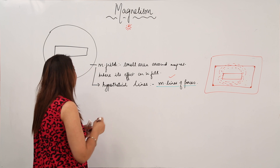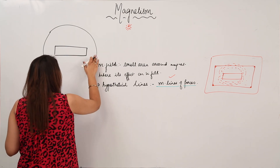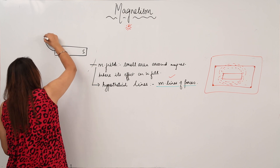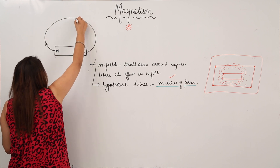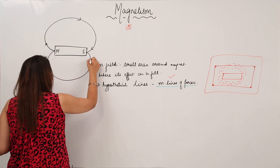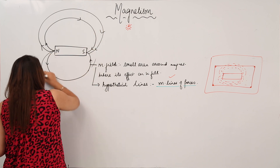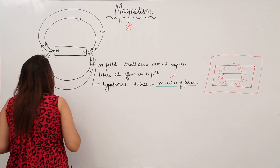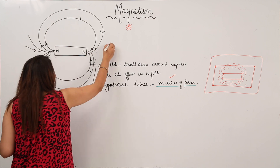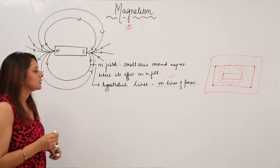If somebody asks you to draw the magnetic lines for a bar magnet, here is how. The bar magnet has a north pole and a south pole. The lines start from the north pole and terminate at the south pole — both above and below the magnet. You can draw many such lines going from north to south, indicating the direction of the field all around the magnet.